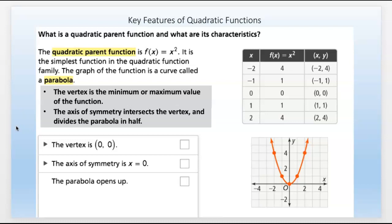The vertex is the minimum or maximum value of the function. It's where it flattens out and changes direction. The axis of symmetry is what intersects the vertex and divides the parabola in half. In this case, the y-axis is the axis of symmetry where x equals 0. This is just where y equals x squared. The vertex is 0, 0 for the parent function. Axis of symmetry is x equals 0. The parabola opens up.